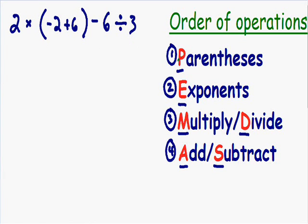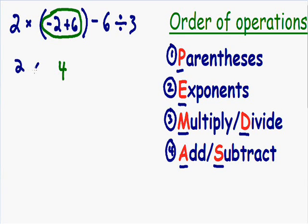Our first step is parentheses — we need to get rid of the parentheses. Inside the parentheses we have negative 2 plus 6, and negative 2 plus 6 is a positive 4. After finishing with the parentheses, everything else stays the same, so we have 2 multiplied by 4, minus 6 divided by 3.